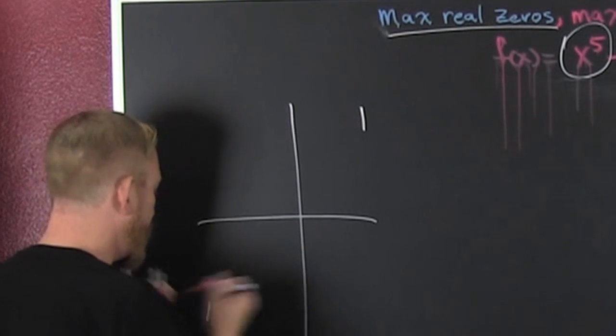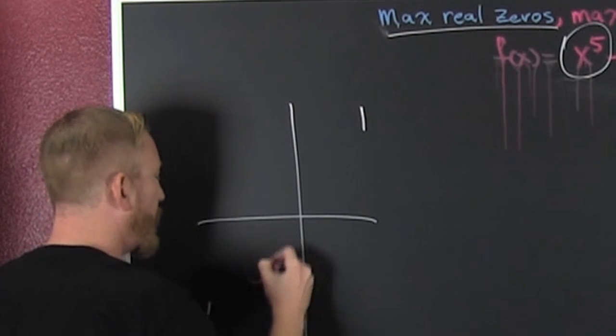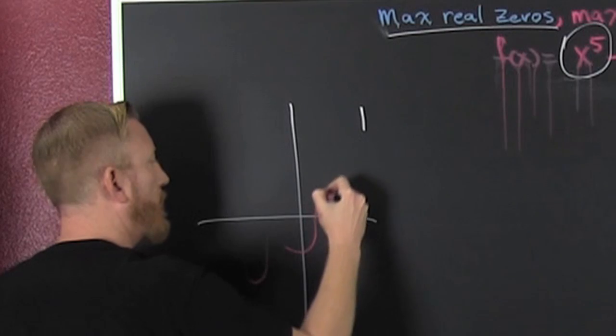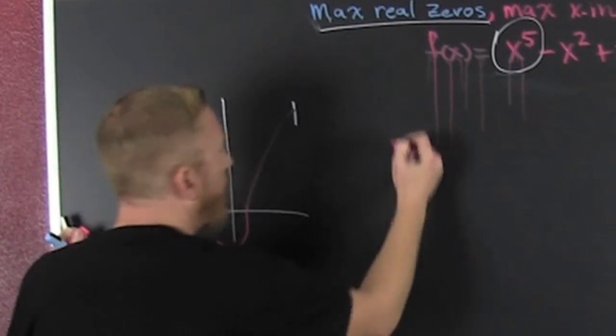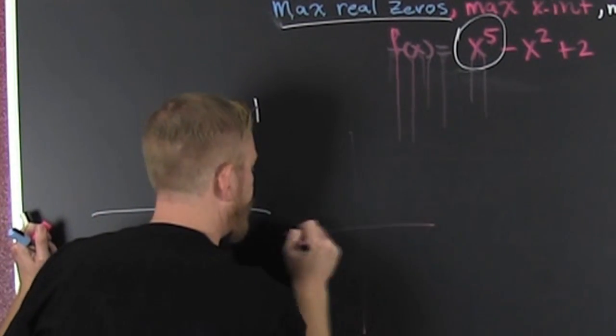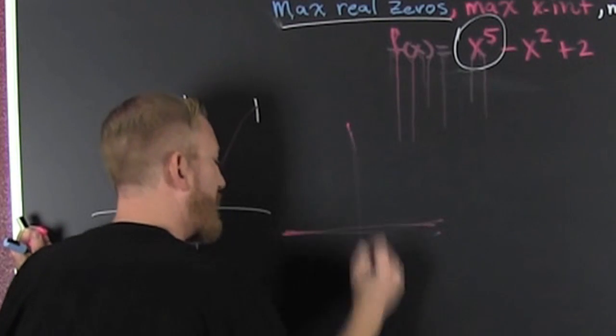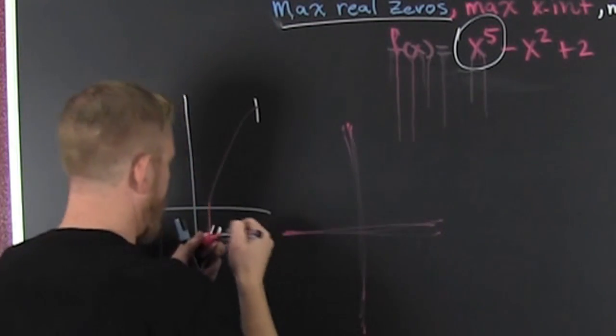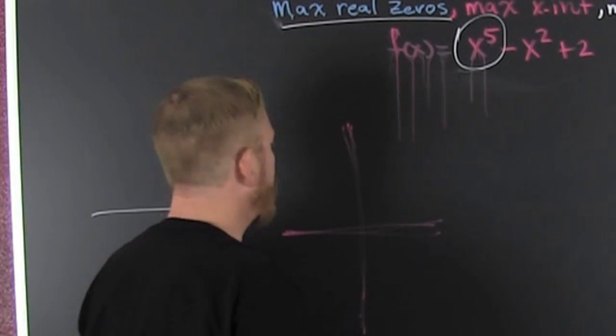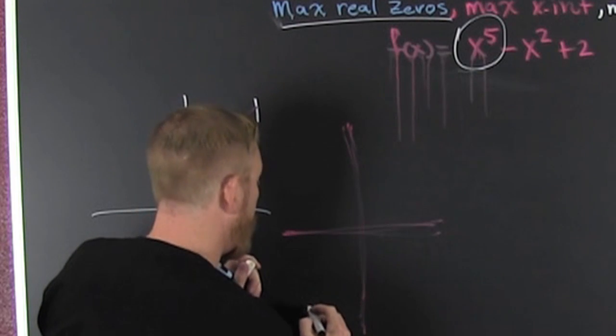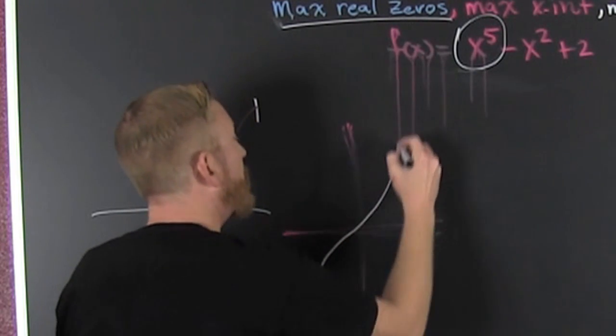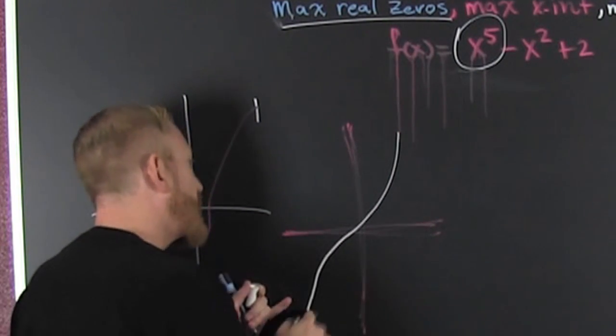It could wiggle it just a little bit, it could wiggle wiggle wiggle and do that, or it could barely wiggle at all, but it has to start down there and end up there.